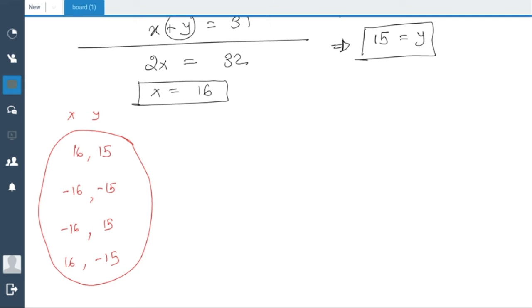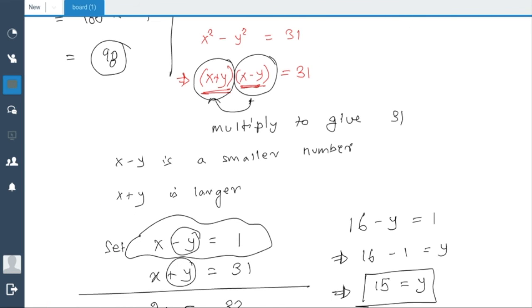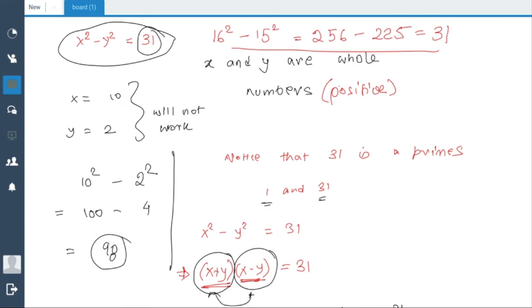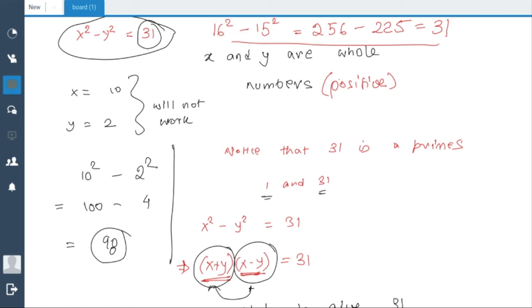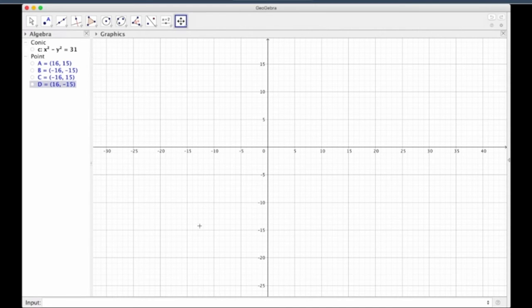Now if you are familiar with coordinate geometry, there is a very powerful implication of this particular problem. So what I'll do is I'll draw the picture of this equation. So if you know coordinate geometry, you know we can draw graphs of equations. So let's draw the picture of x² - y² = 31.